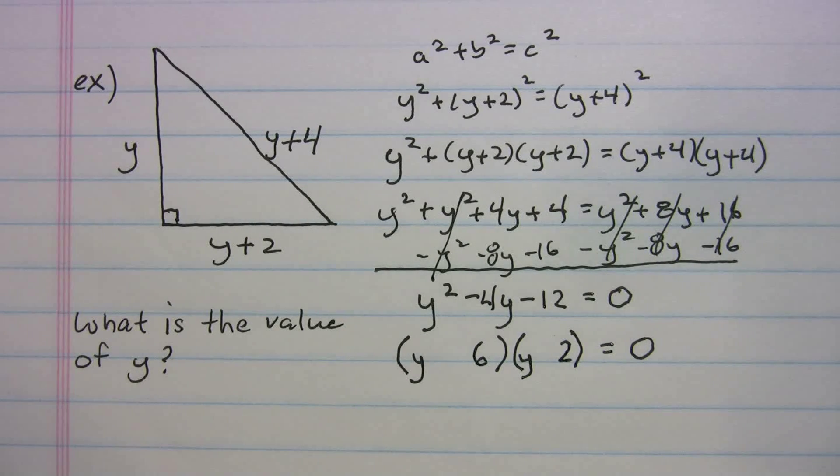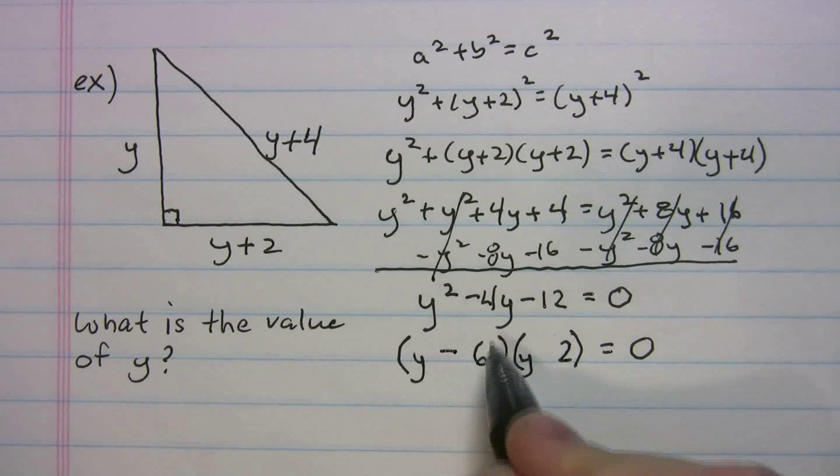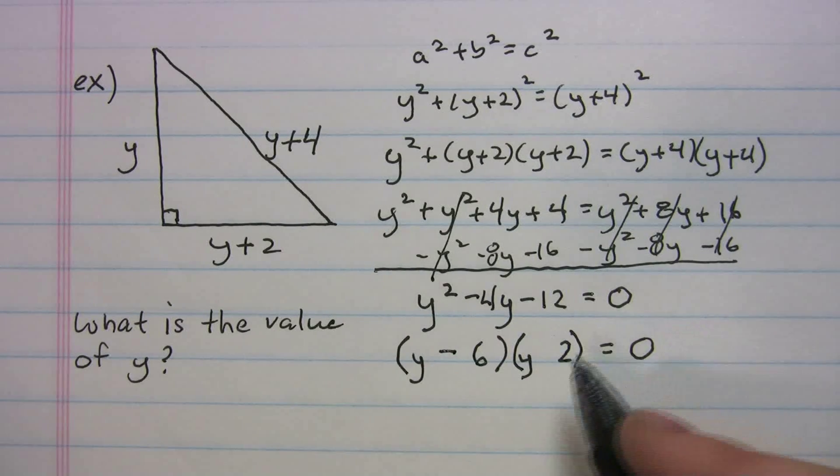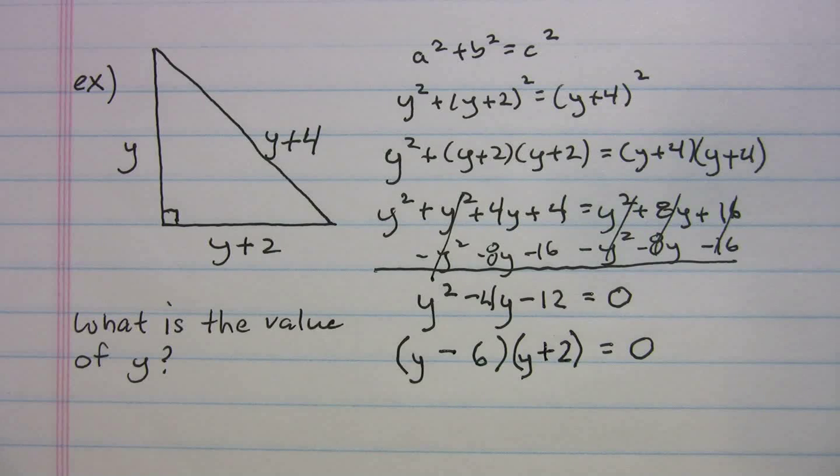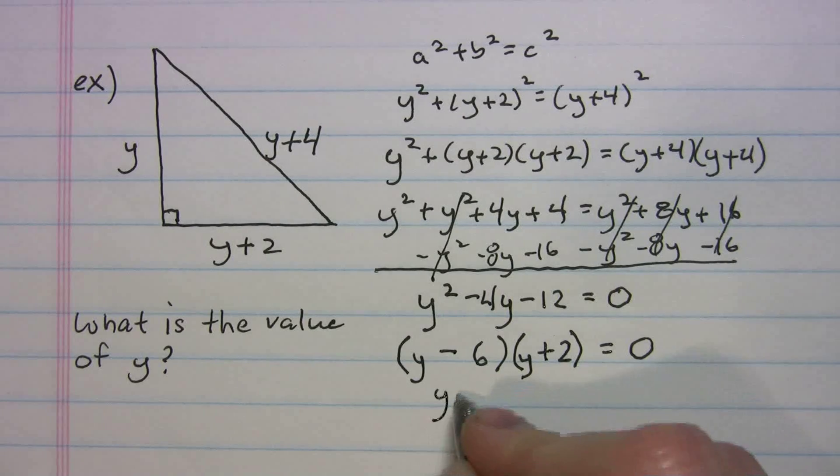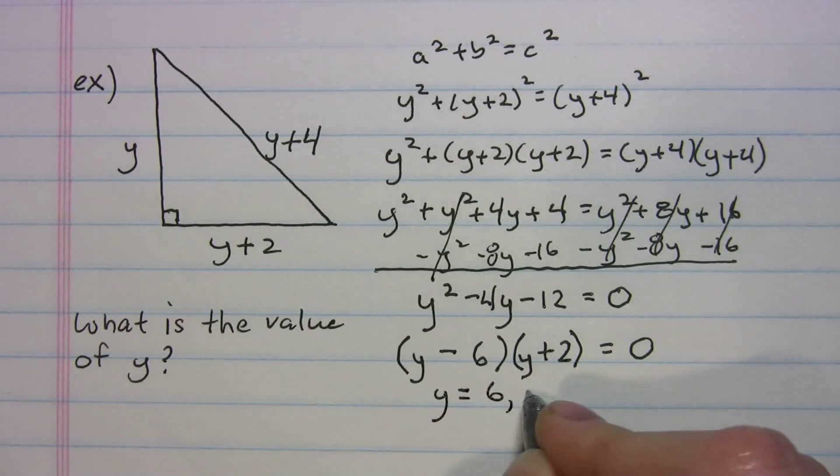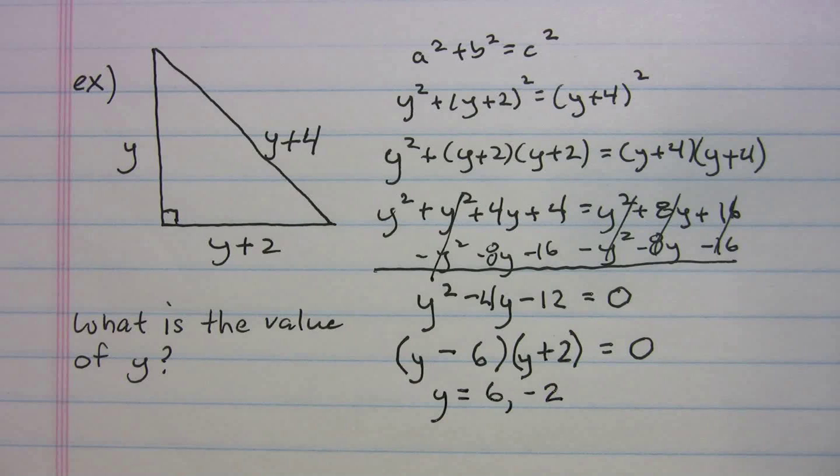Is it going to be minus 6 or plus 6? Well, it's going to be minus 6 because this middle term is a negative 4. So it's going to be minus 6 and plus 2. And you can check that just to make sure it works. And I promise you it works. So y is going to be equal to 6 or negative 2.